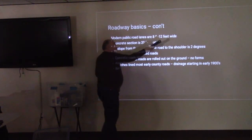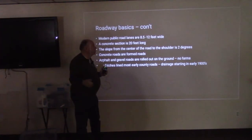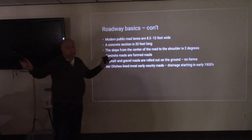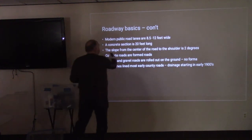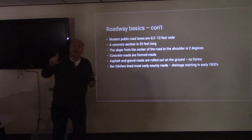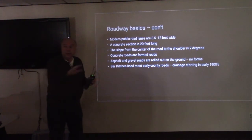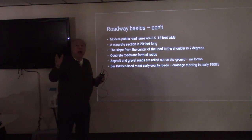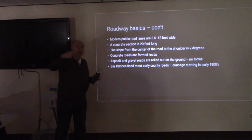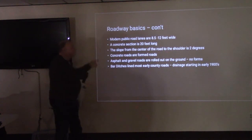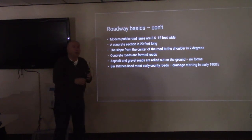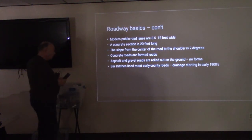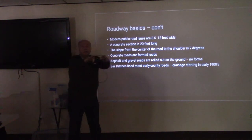On modern roads, depending upon the time period — whether you're modeling the 40s, 50s, 60s, 70s, or later — your lanes are going to be 8½ to 12 feet wide. A concrete section is approximately 20 feet long. That's a detail point. Can you paint a piece of styrene, lay it down as concrete road, and have no sections in it? Yes, it's your railroad. However, if you're trying to recreate something that looks like a real concrete road, the section is approximately 20 feet long.